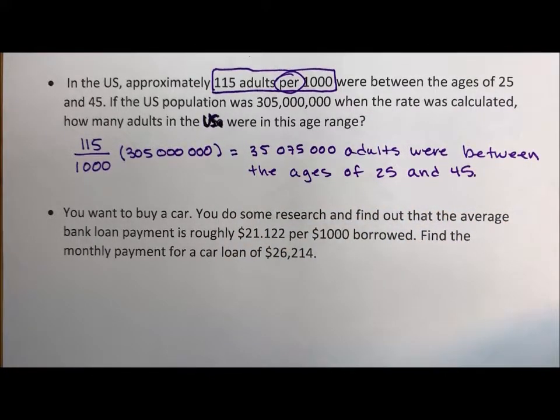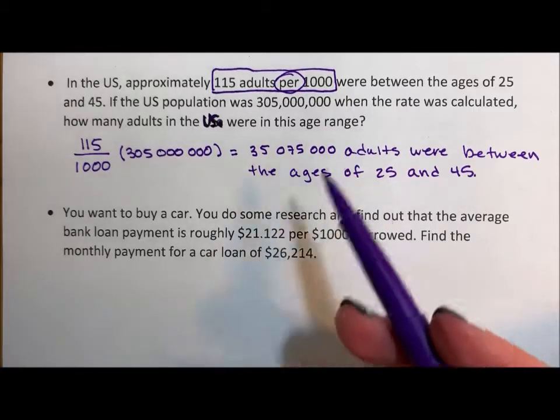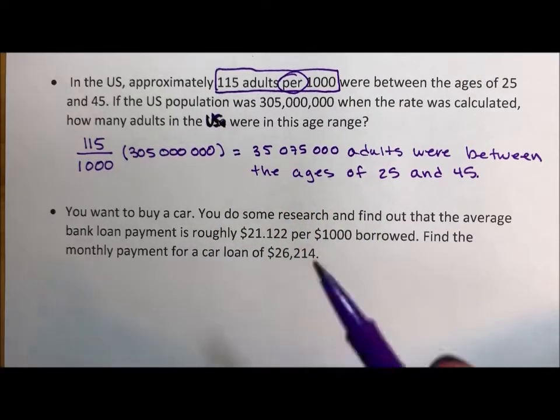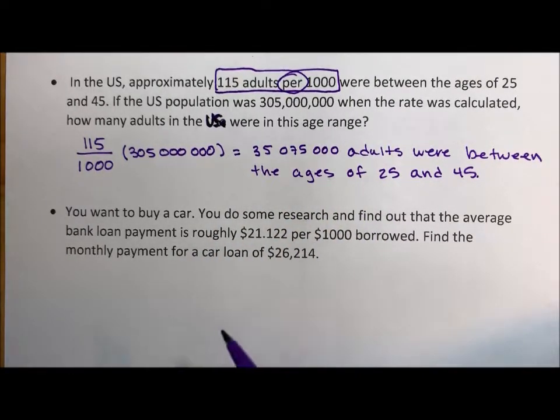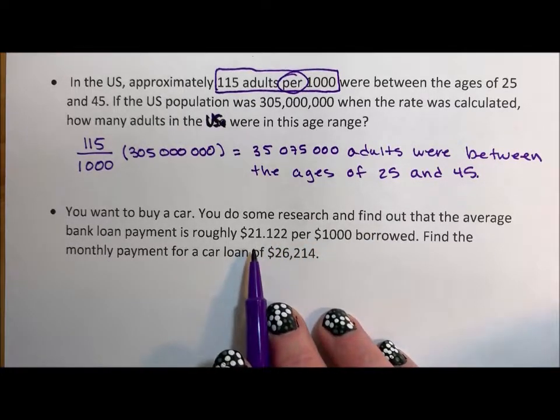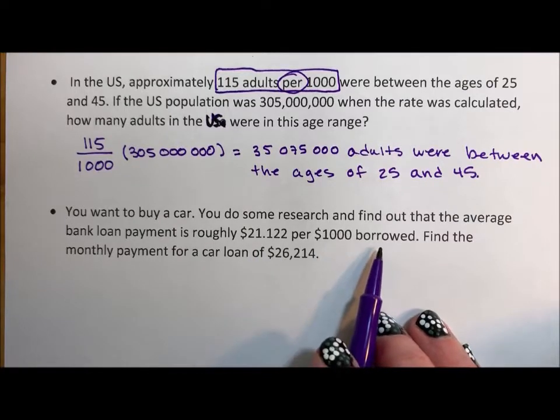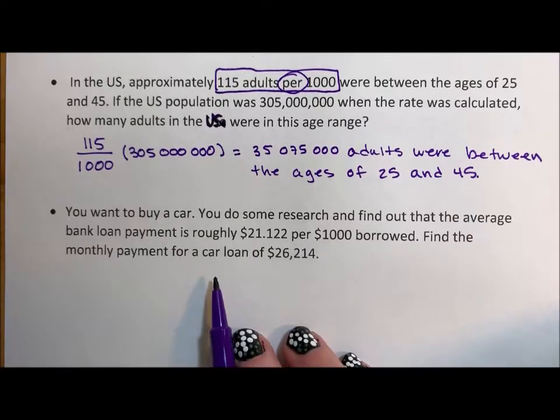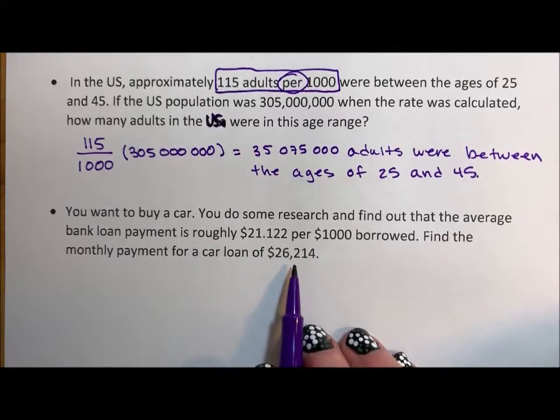Okay. Just to show the similarity, kind of two questions with different words but same concept. You want to buy a car. You do some research and find out that the average bank loan is roughly $21.122 per a thousand dollars borrowed. Find the monthly payment if the car loan is $26,214.